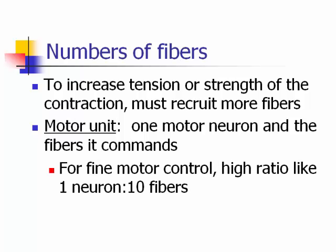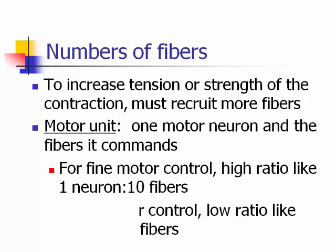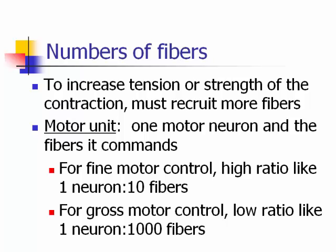For fine motor control you have a high ratio — like one neuron to ten fibers — and for gross motor control a low ratio, like one neuron to 1,000 fibers. Fine motor includes writing or moving your fingers precisely. Gross motor is walking. Little toddlers can't do fine motor tasks — they can only grasp big chunky things with their whole hand. For speaking and writing you want a higher ratio.